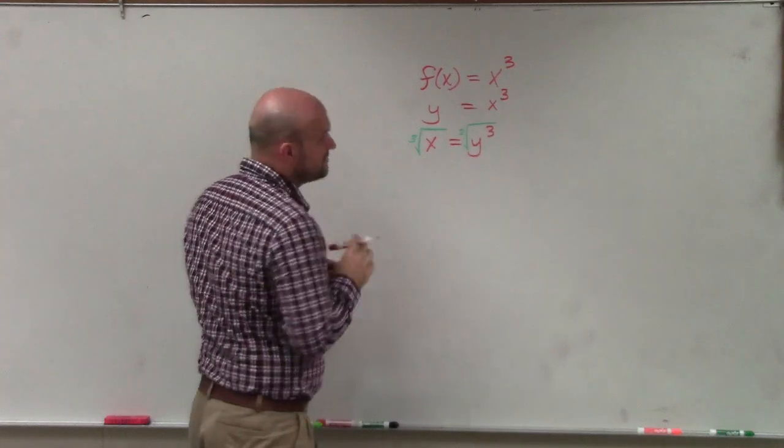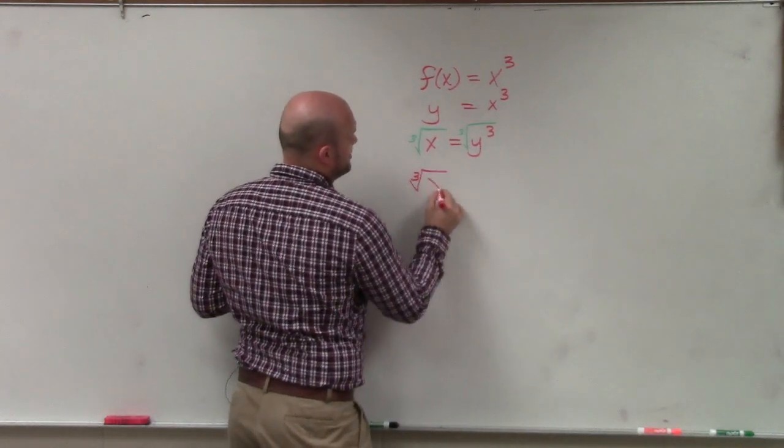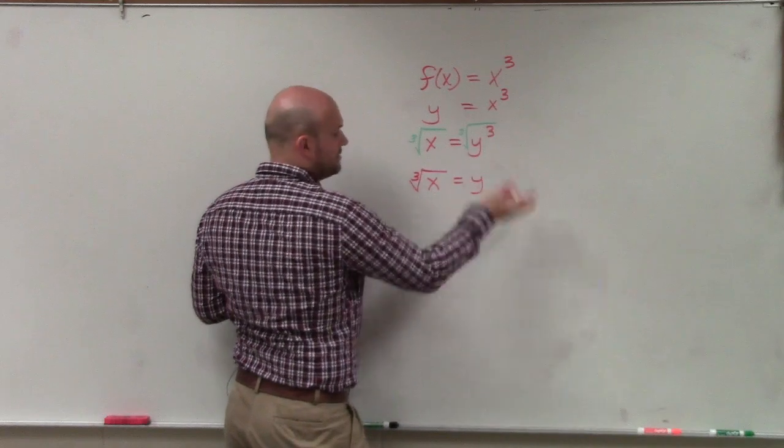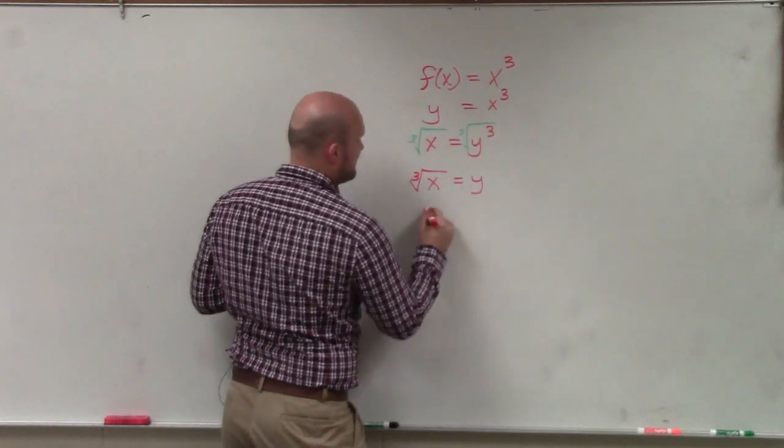So the cube root of something cubed is just going to be isolated. So it's the cube root of x equals y. And then we replace y with f inverse of x.